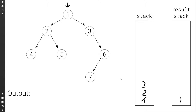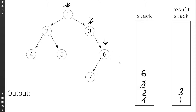Once we've done that, we go again to the first stack, and we're going to set current to the top of the stack, which is three. We will pop the three, and we're going to push it to the result stack. Then again, we check does it have a left child — no it doesn't. Does it have a right child — it does, so we're going to push it to the first stack. And once we're done with the three, we go back to the first stack and set current to the top, which is six. We will pop it from the first stack and push it to the result stack.